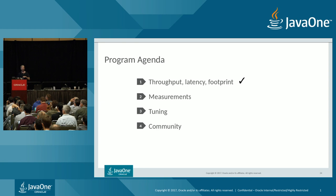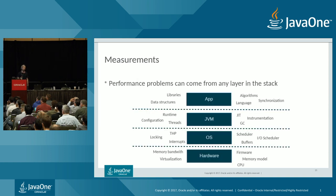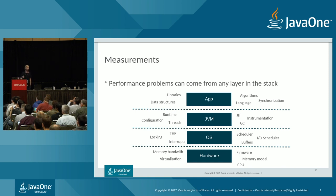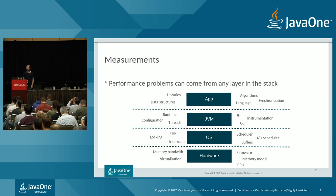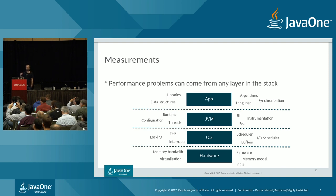Now we'll look at how to get data out of the JVM. Performance problems can come from any layer in the stack — your own application with suboptimal data structures, libraries, or algorithms; the JVM itself with JIT, locking, synchronization, or GC issues; the OS kernel with scheduler or huge pages problems; a C library in user space; or hardware issues like outdated firmware, virtualization problems, or memory bandwidth. This talk focuses on the JVM and GC, but maximum performance requires examining the whole system.